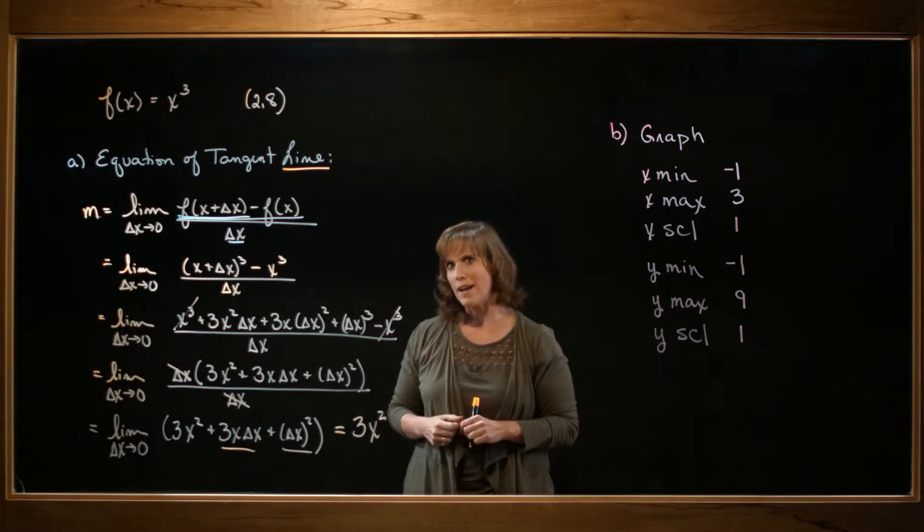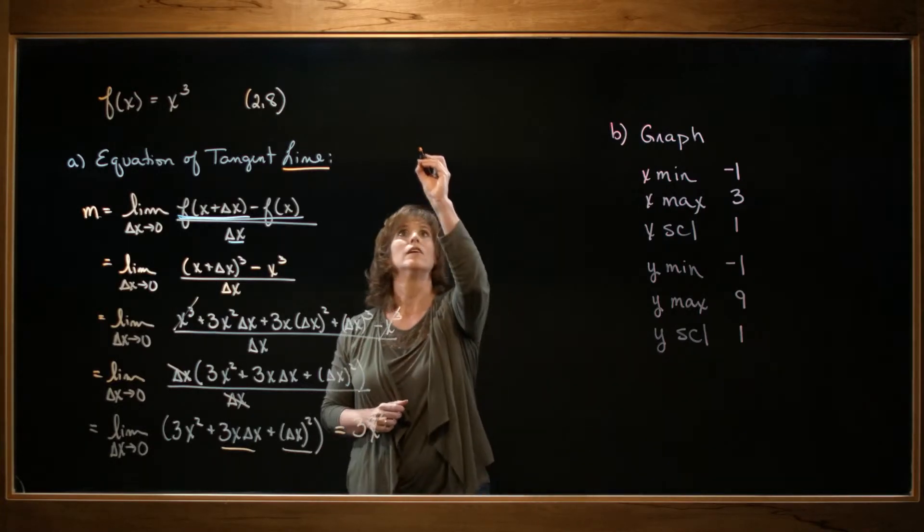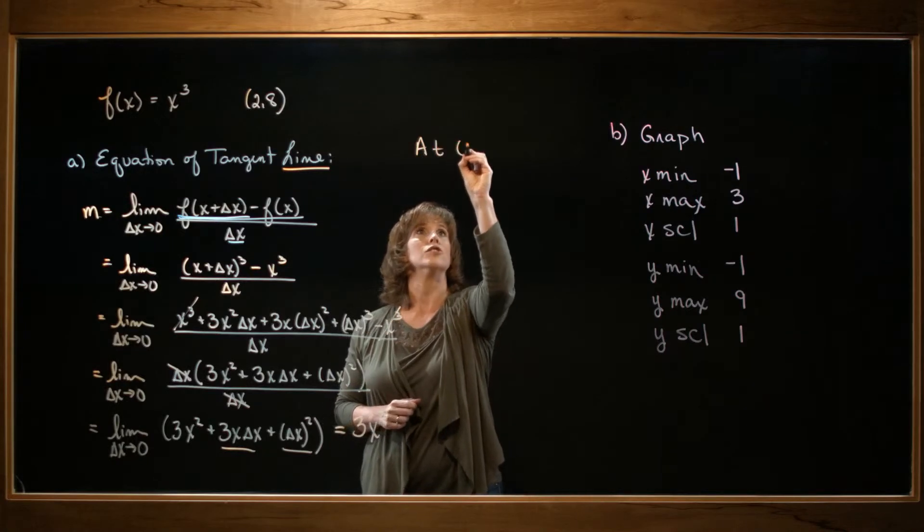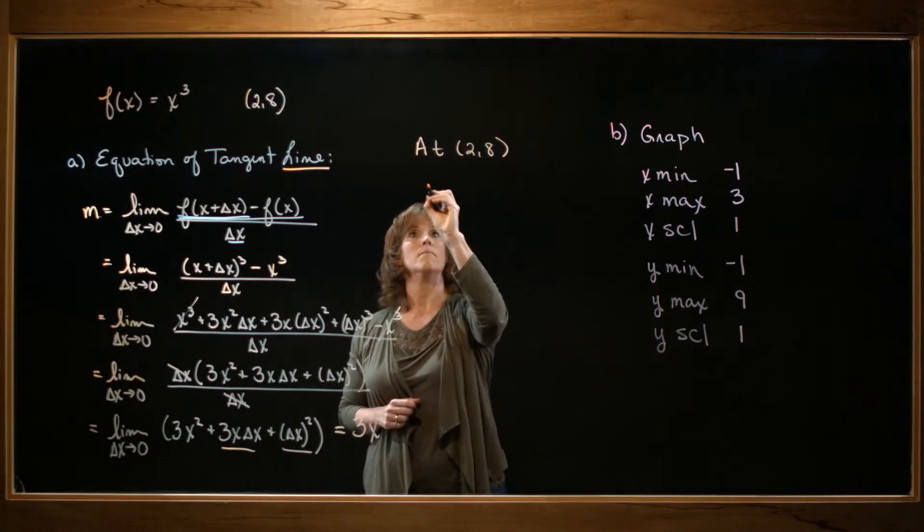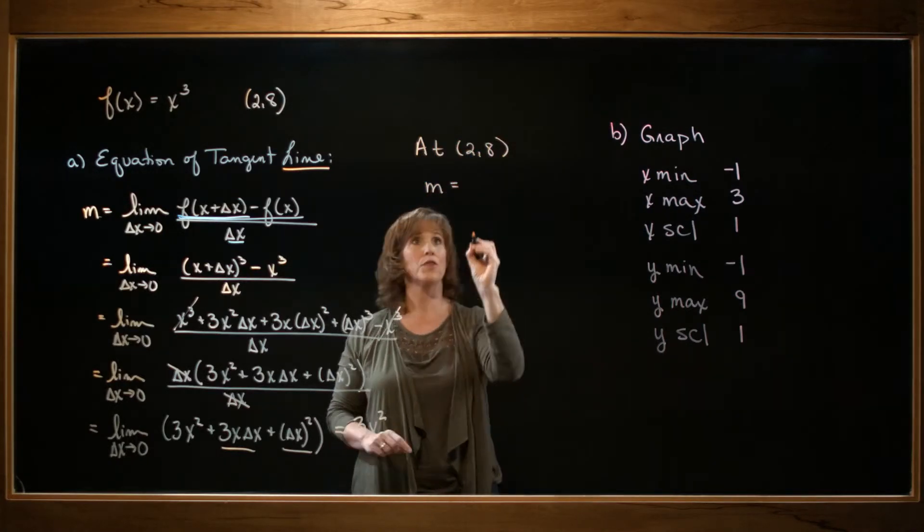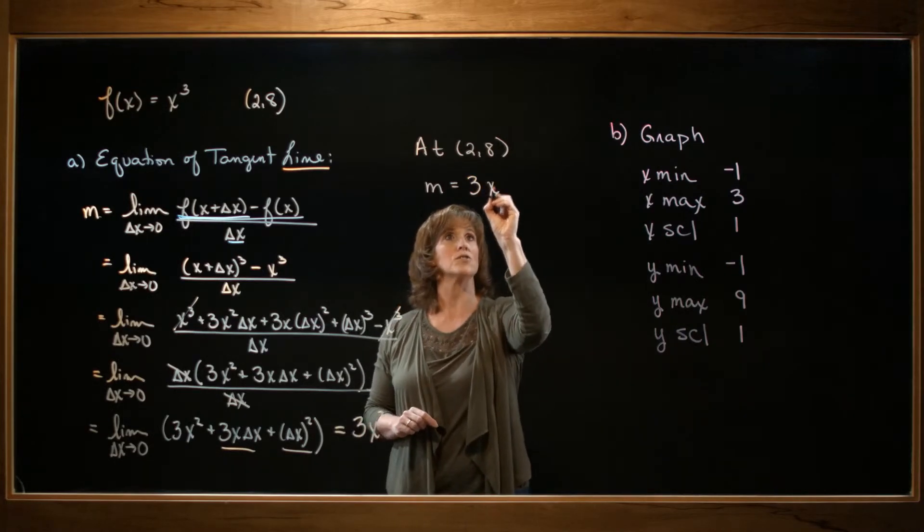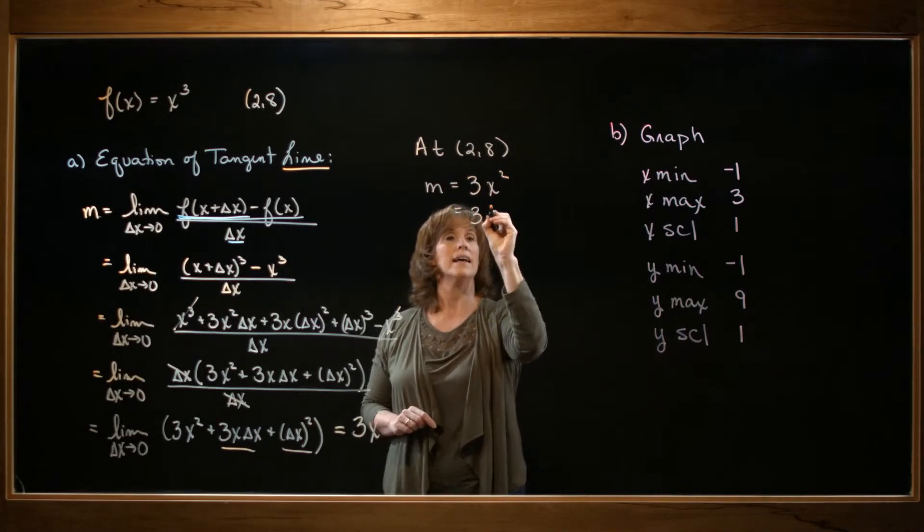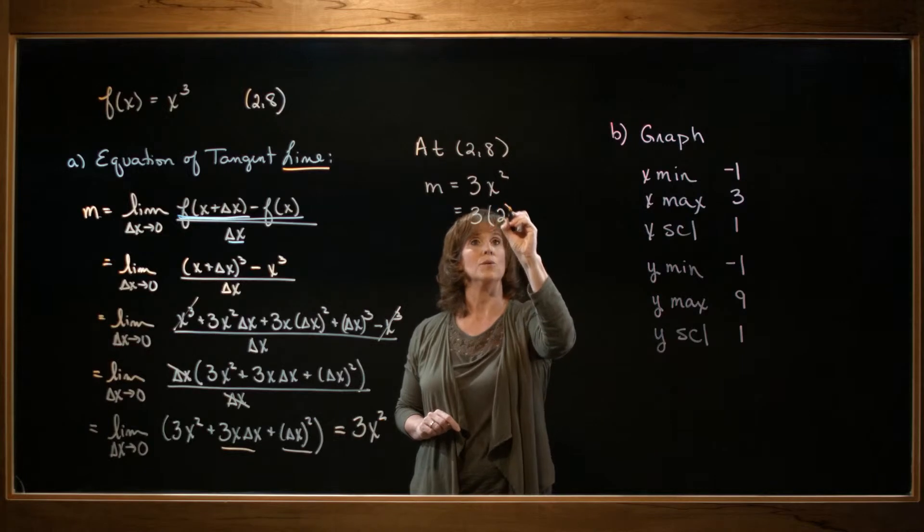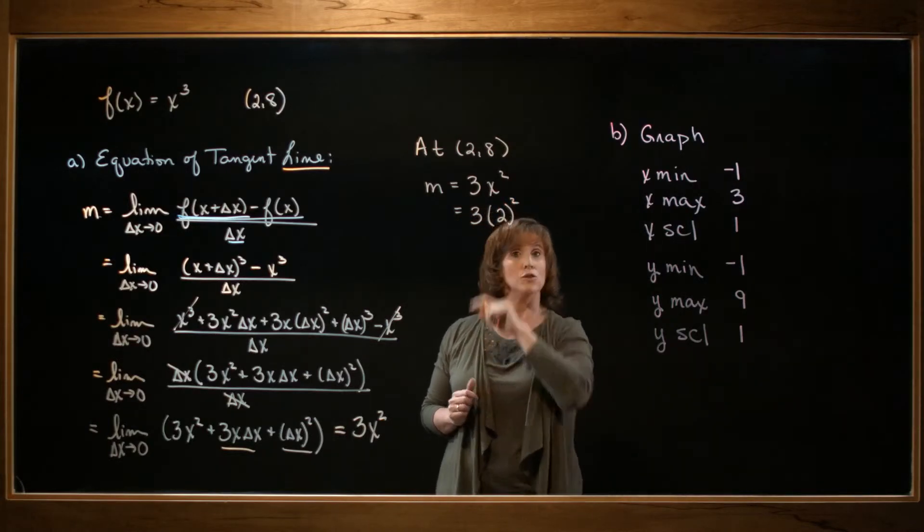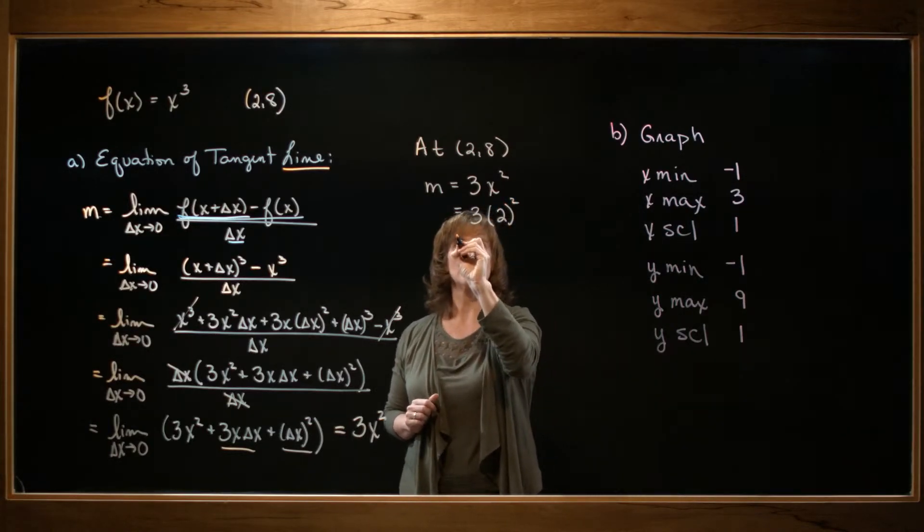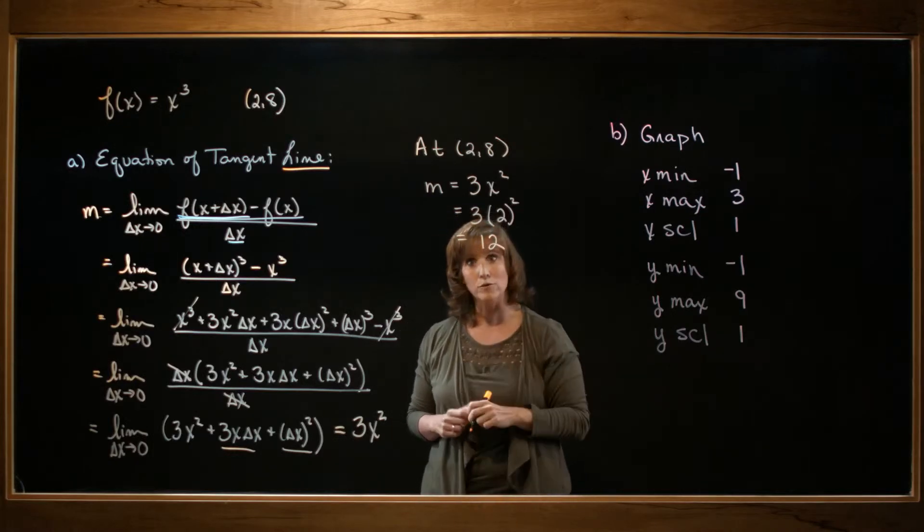Now I want to find out what happens at the point 2, 8. So at the point 2, 8, my slope is going to be 3 times x squared and x is going to be 2. 2 squared is 4 times 3 gives me a slope of 12.